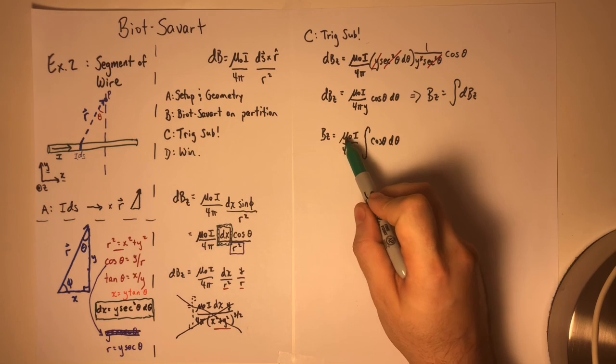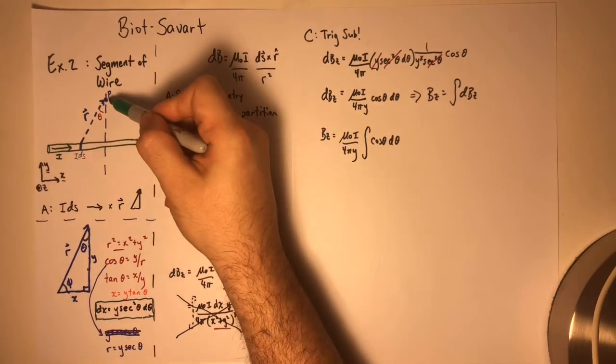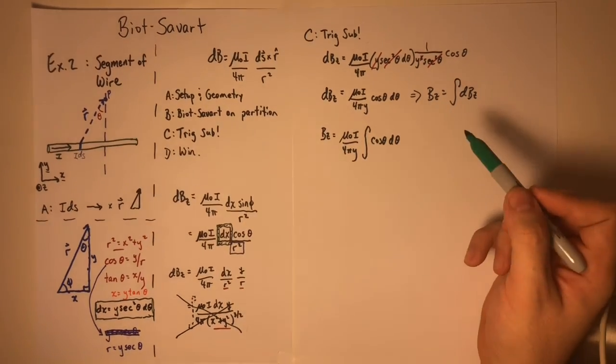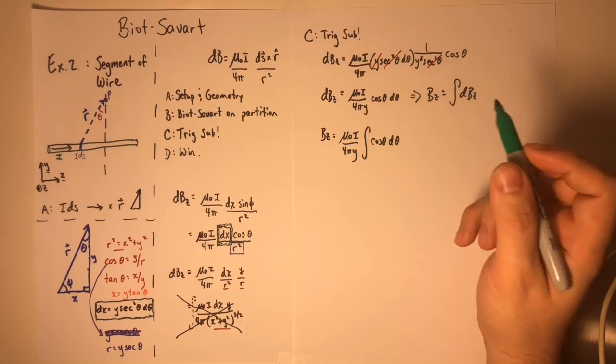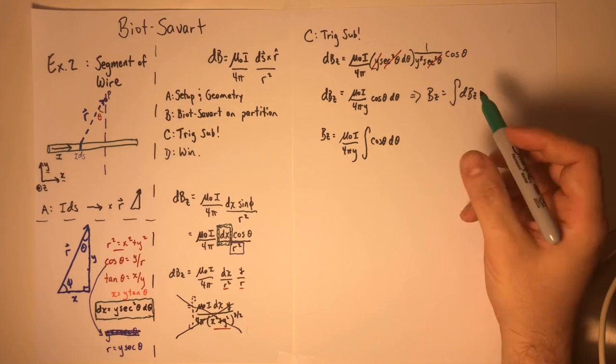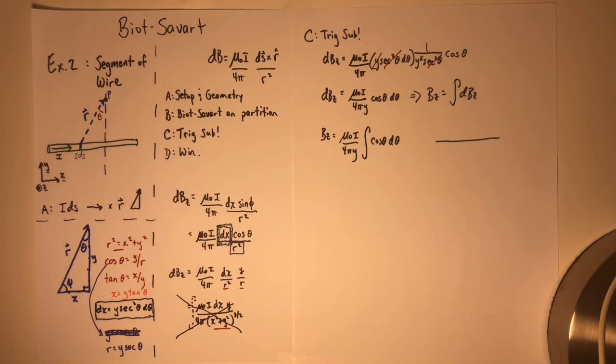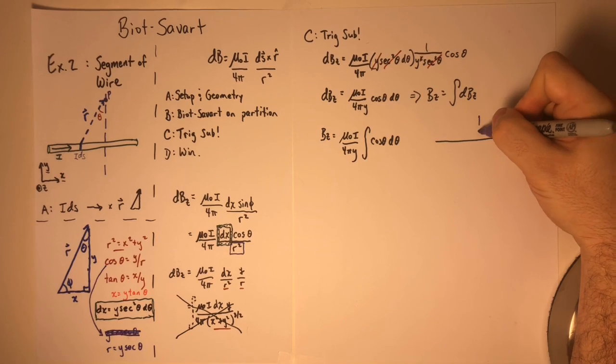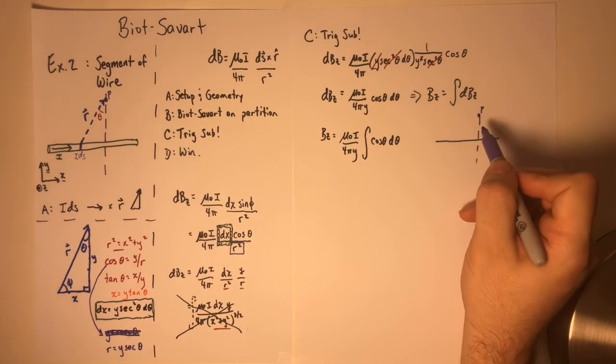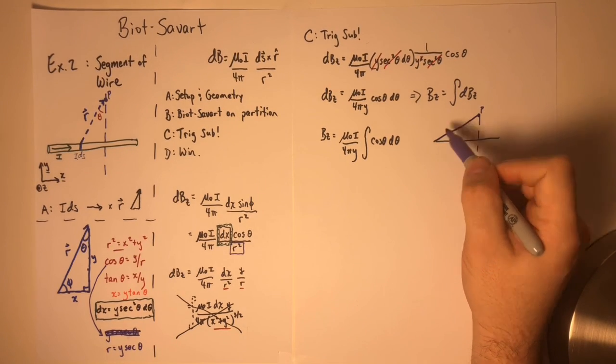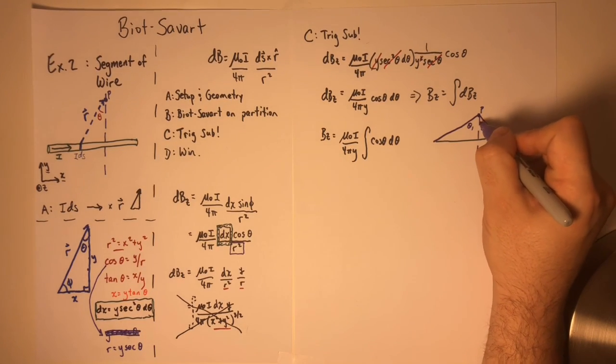So when I write the integral, you see that all of these terms come out, even the Y, because again Y is a constant. This vertical distance is the same for all of the segments of the wire. And all that's left to do is to figure out the upper and lower limits of integration. If I kind of quickly resketch this segment of wire, we have point P up here. Then we can simply call this thing theta1 and call that thing theta2.